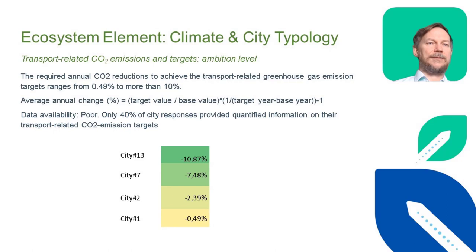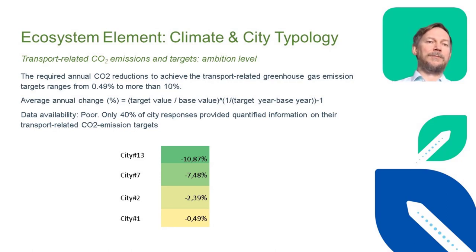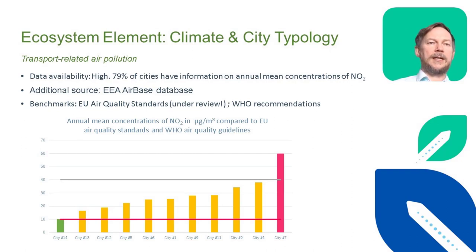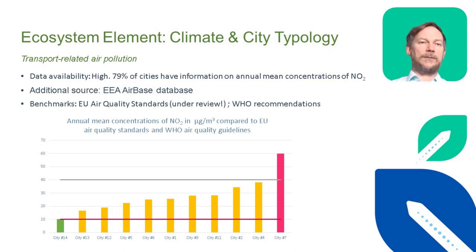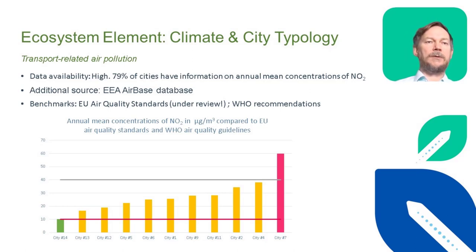For cities with CO2 targets, we calculated the required annual change assuming a linear pathway from base year to target year. Targets ranged between 11% reduction per year and more or less stabilizing emissions. Regarding transport-related air pollution, we looked at NO2 and PM10, comparing to the WHO standards and the EU Air Quality Directive. One city achieved the WHO standards while one city exceeded the European limits. It should be noted that the European Directive is currently under review and we will likely see tighter standards, meaning the upper threshold will come down in coming years.